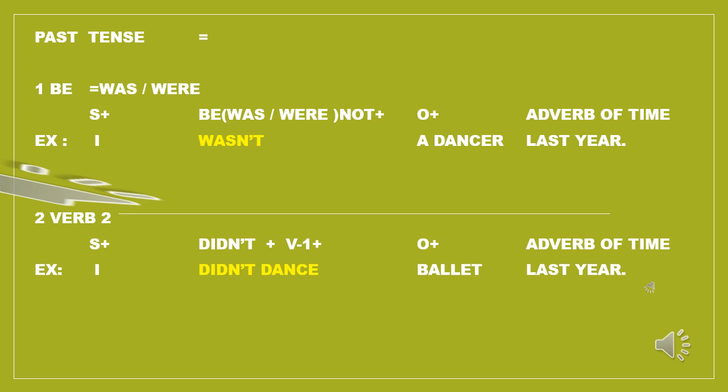For BE negative, 'was' and 'were' are followed by 'not.' For example: 'I wasn't a dancer last year.' Here, 'I' is the subject, 'was' is the past tense BE verb with 'not' added, 'a dancer' is the object, and 'last year' is the adverb of time.